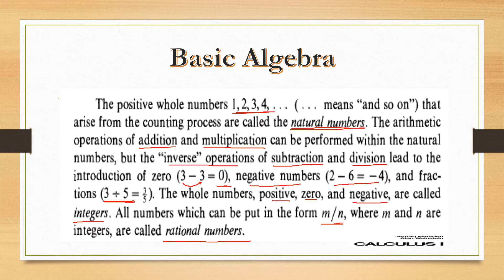These are basic concepts that you are already aware of. You know about rational numbers, and you are also aware of irrational numbers, which cannot be written in the form of m/n and are therefore called irrational numbers.